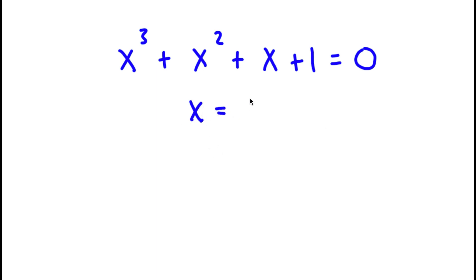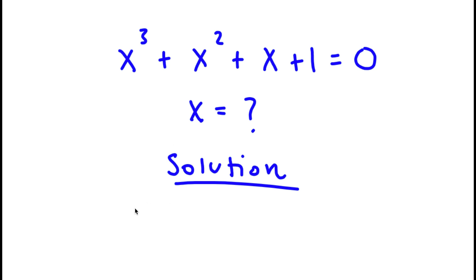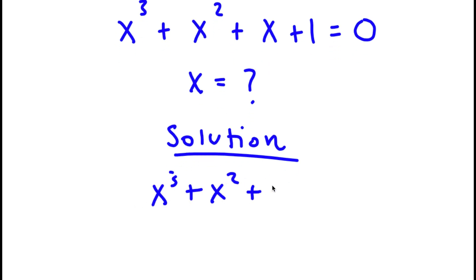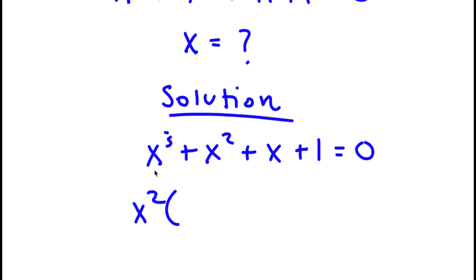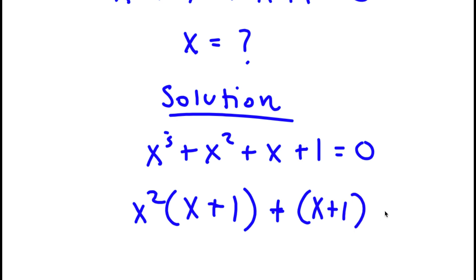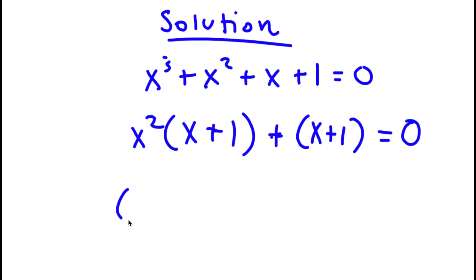I'm going to find the value of x. Starting with x³ + x² + x + 1 = 0, from x³ + x², I'm going to factor out x². So now I have x² times (x + 1), plus simply x + 1. This is equal to 0. Now, if I factor out x + 1 from this, I get (x + 1)(x² + 1) = 0.